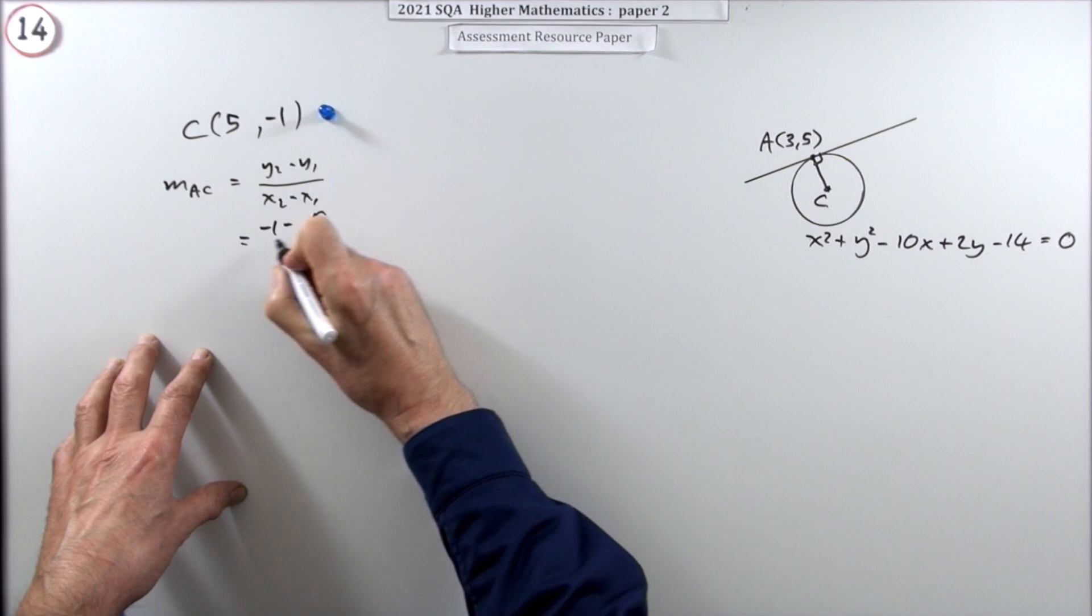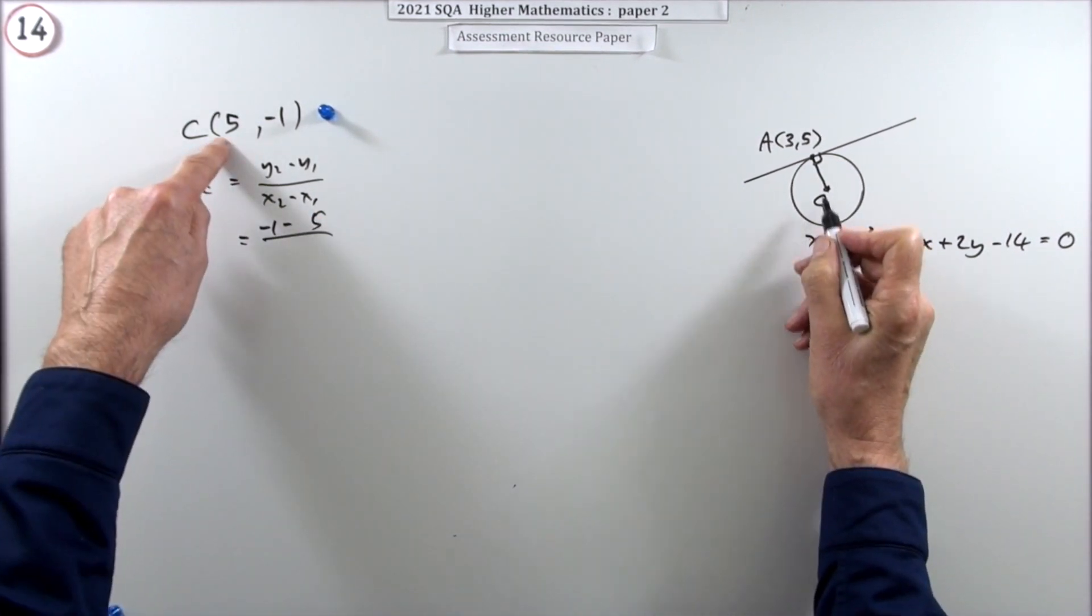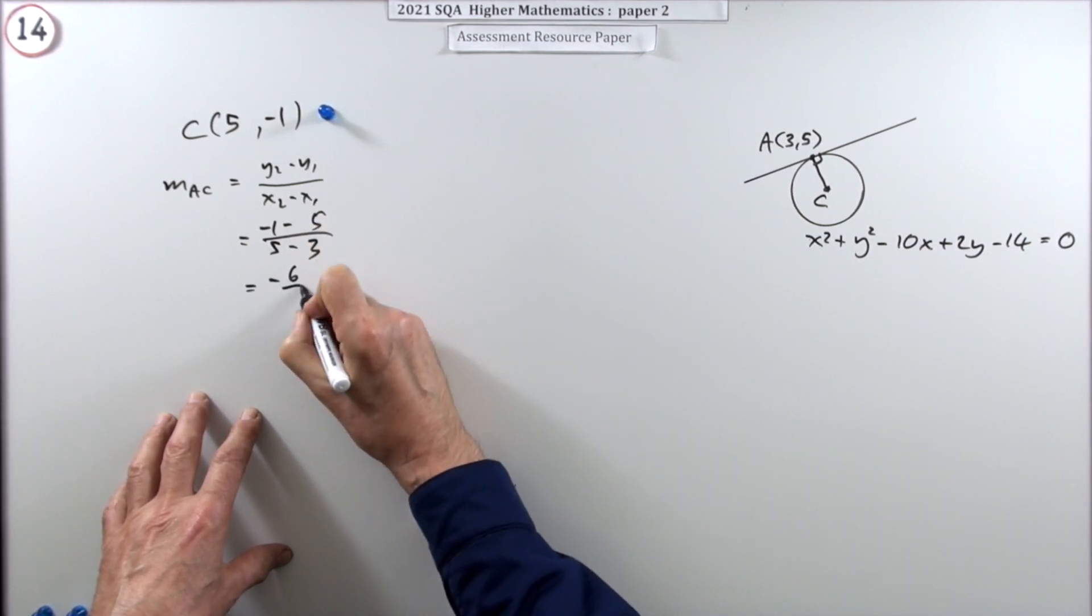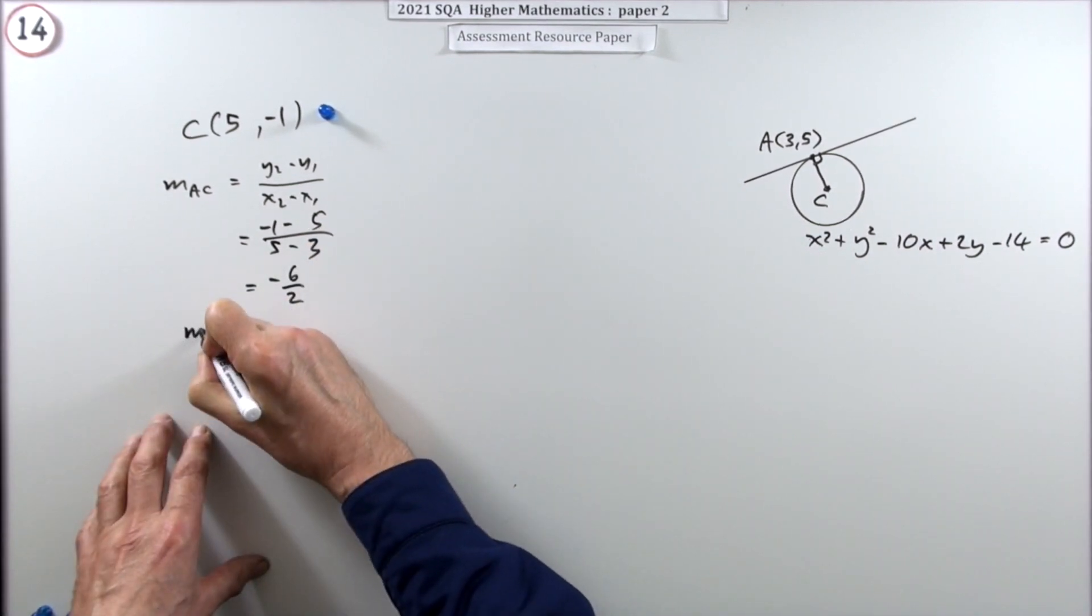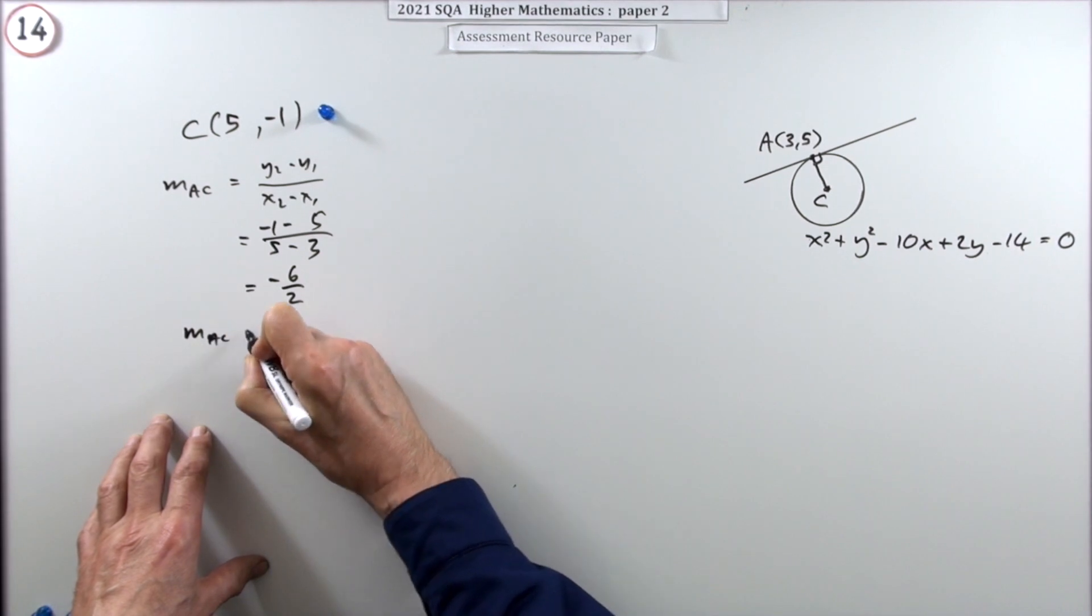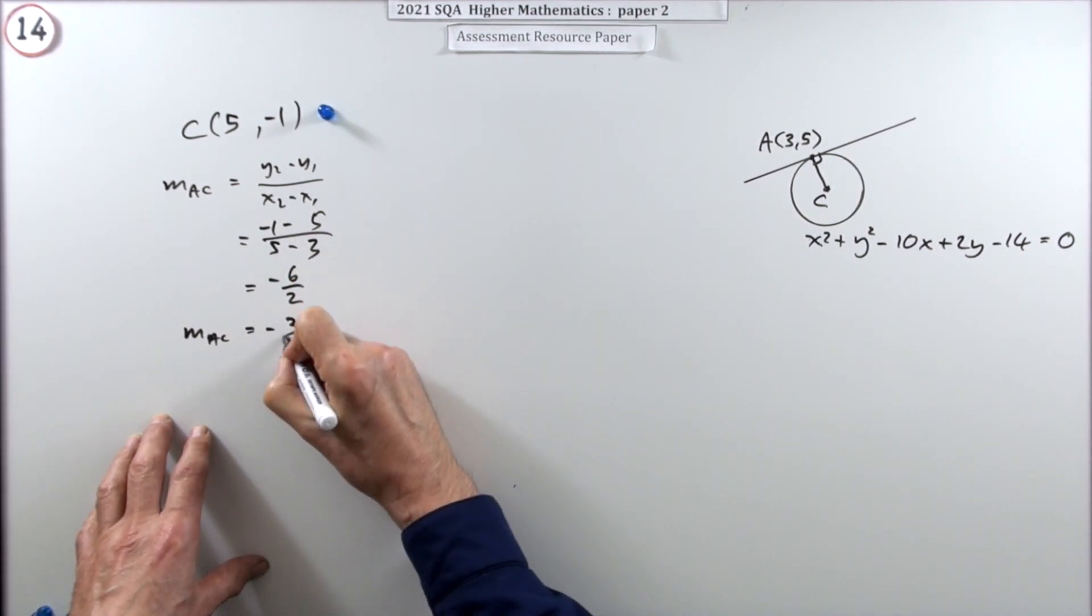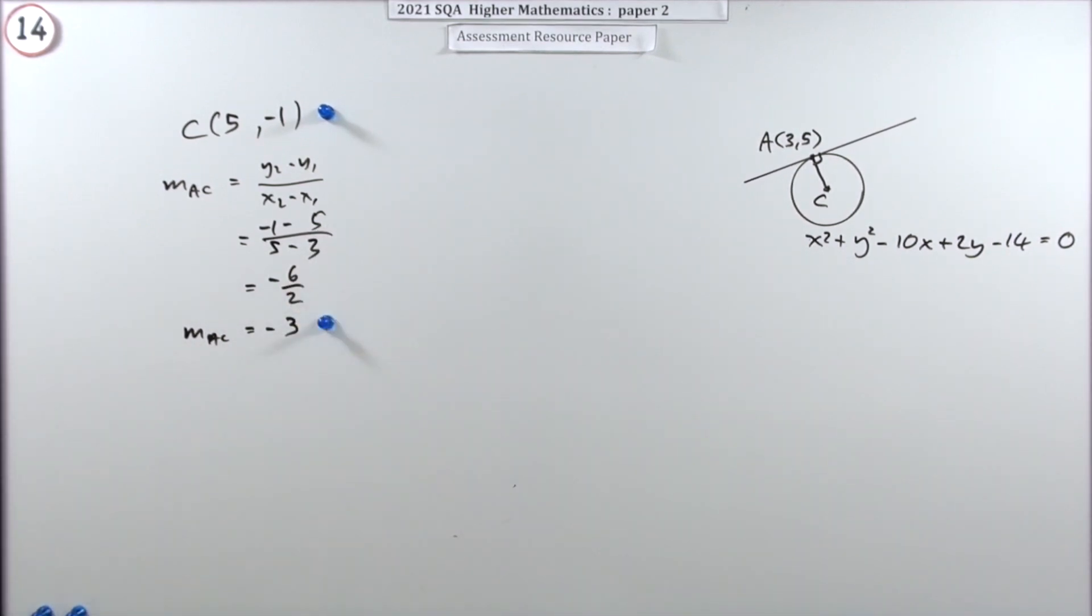So, negative 1 take away 5 for the difference in the y's, and 5 take away 3 for the difference in the x's. That's going to be negative 6 upon 2. So that means the gradient of AC, which is the gradient of the radius, that particular radius, is negative 3. That gets a mark.